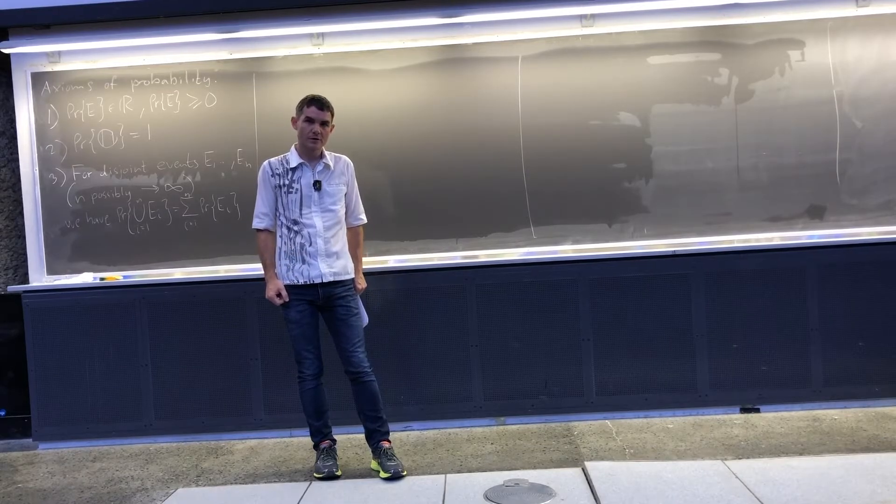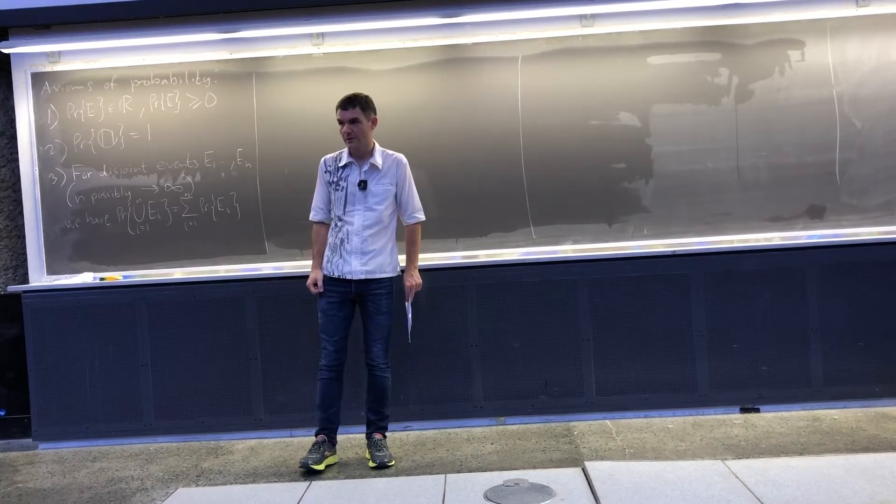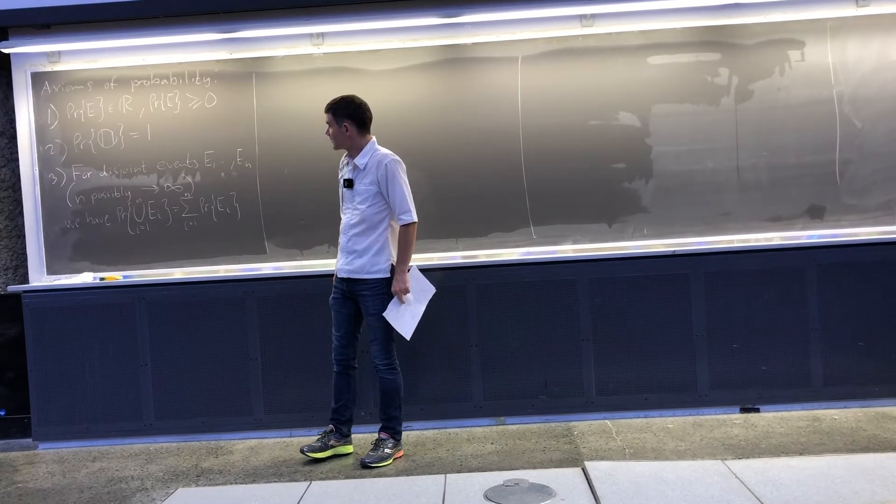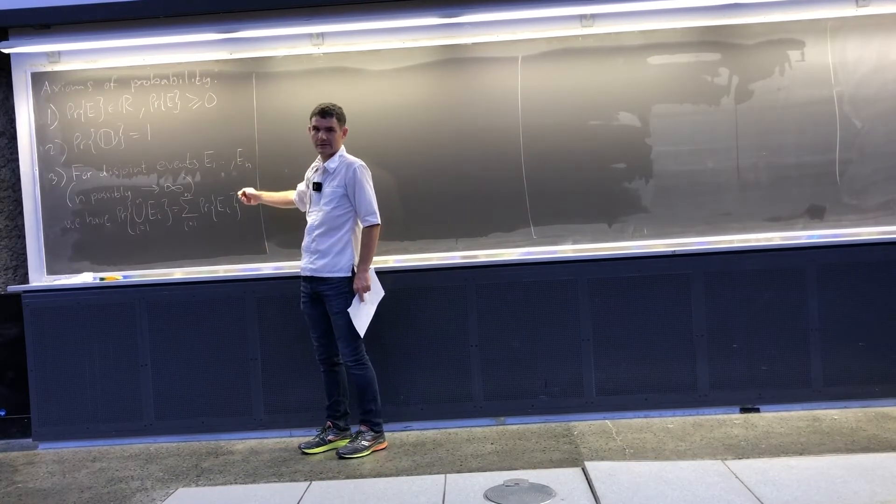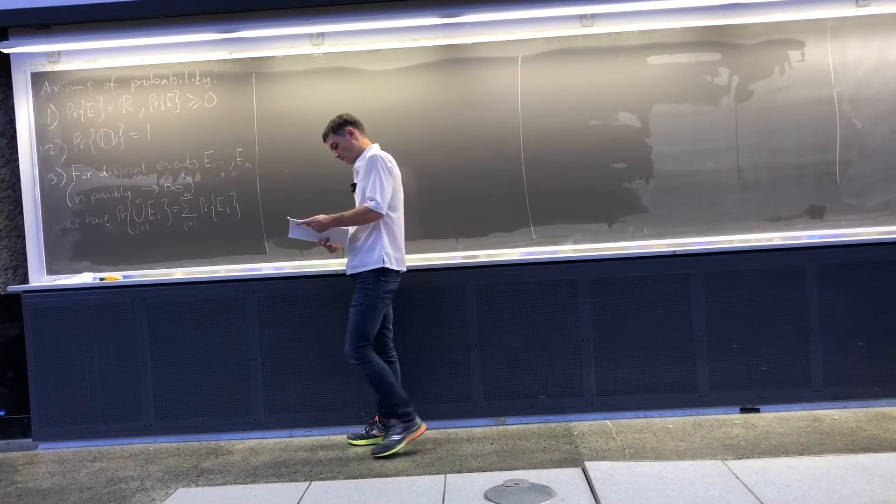I want to spell out the proofs of both the total probability theorem and Bayes theorem. A starting point for the axioms of probability that I have here. And let us then first look at the total probability theorem.